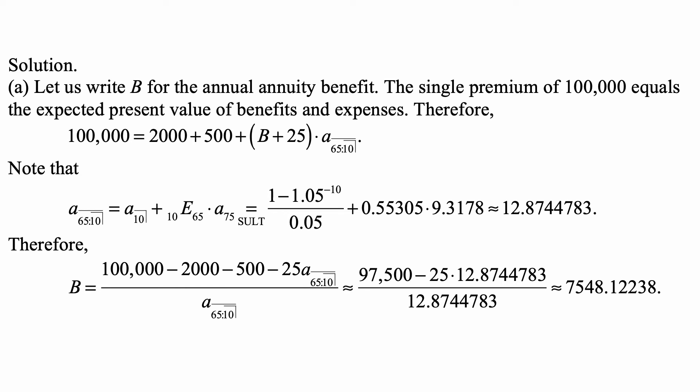Therefore, B equals (100,000 - 2,000 - 500 - 25 × 12.8744783) / 12.8744783. That's approximately 7,548.12238.